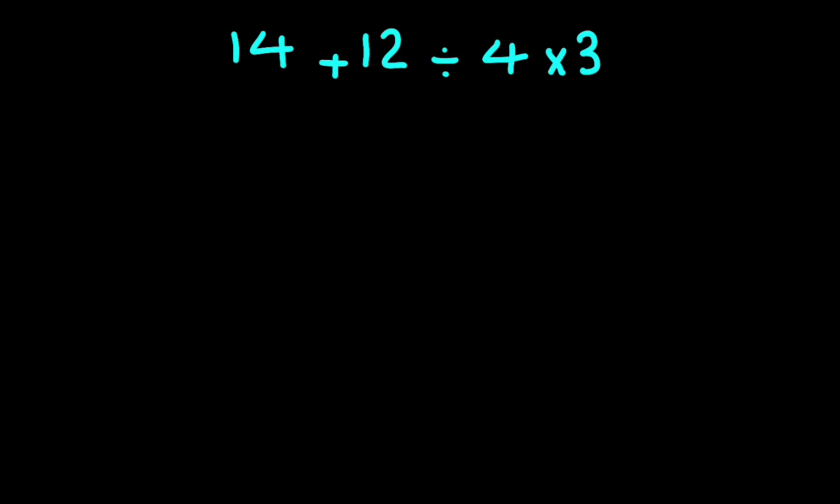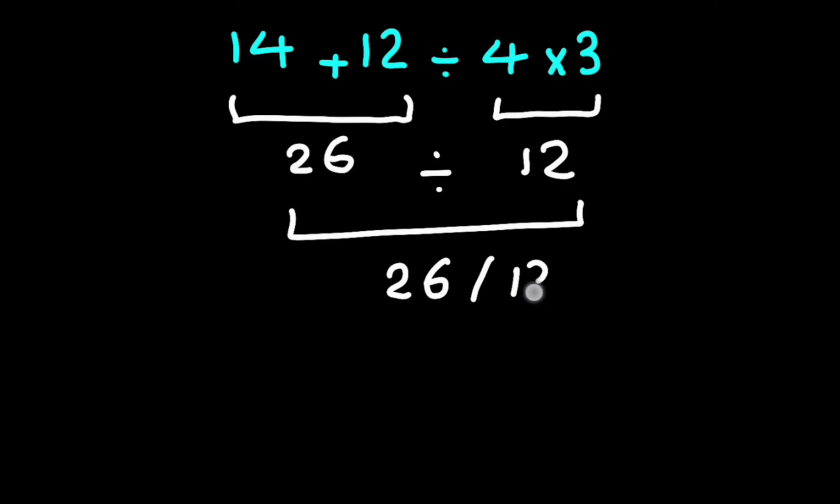Now 14 plus 12 equals 26, 4 times 3 equals 12. Now 26 divided by 12 equals 26 over 12. But this answer is not correct according to the rules of mathematics.